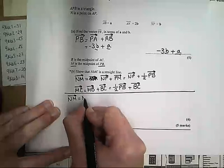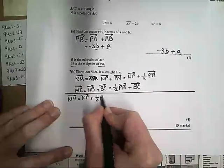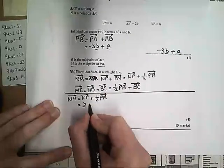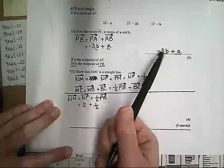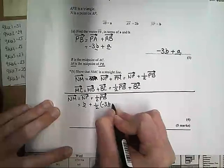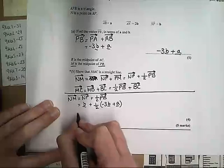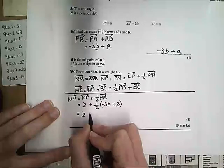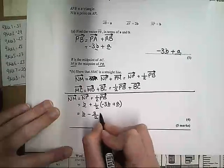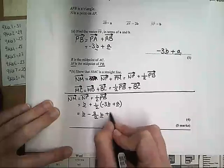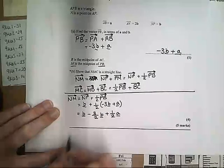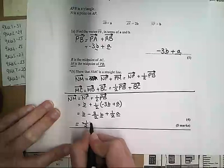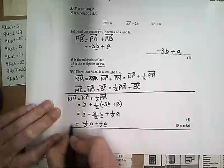So N to M is N to P plus half of P to B. N to P is B, that's on the diagram already, and P to B we have already done over here, so we're doing a half of -3B plus A. And then if we expand those brackets, we've got B, and then -3 times a half is -3/2, and a half times A is just a half. And then we can add those together, so I've got a whole B, take away 1 and a half B's, so I've got -1/2 B plus 1/2 A. So that's what N to M is.